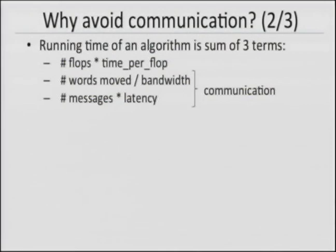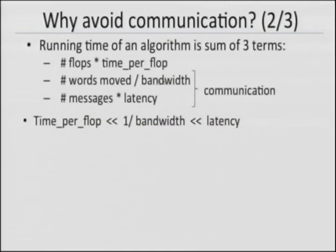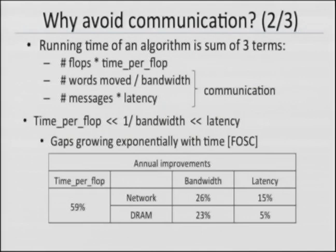As people in this audience probably know, these three hardware parameters are orders of magnitude apart. It costs an order of magnitude more time to move a word than to do a floating point operation, and technological trends are making these gaps grow asymptotically. Thanks to Moore's law and multicore, the time per flop is getting better at 59% a year, and everything else is getting better but much more slowly. So even if your algorithm is not communication bound today, it may be next year or the year after.